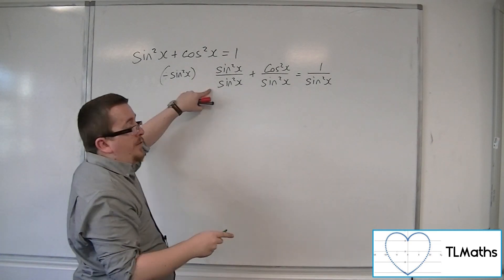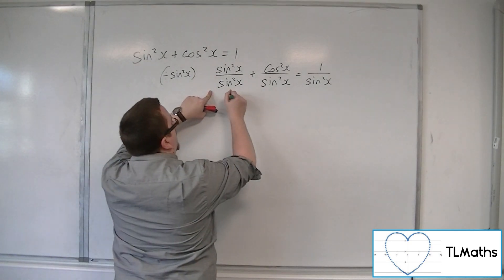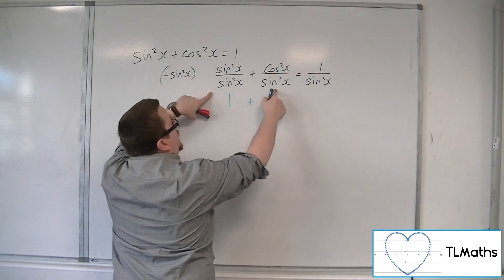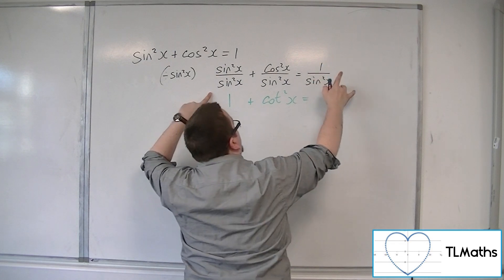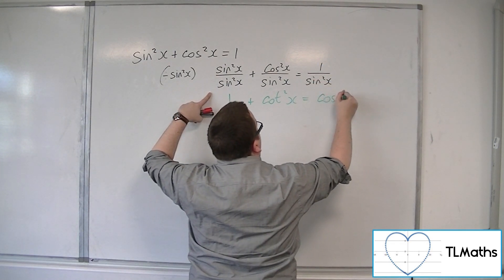Now, sine squared over sine squared is just 1. Cos squared over sine squared is cot squared. And 1 over sine squared is cosec squared.